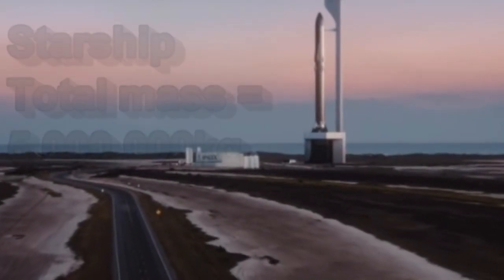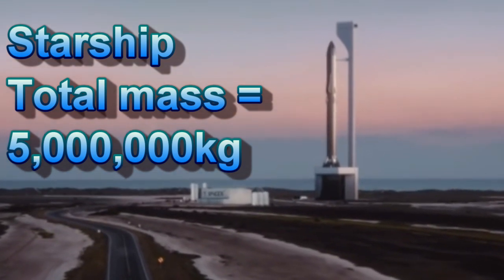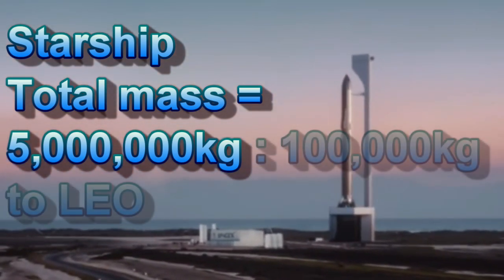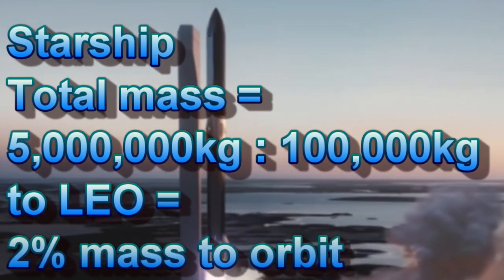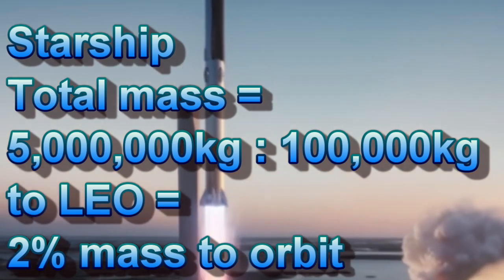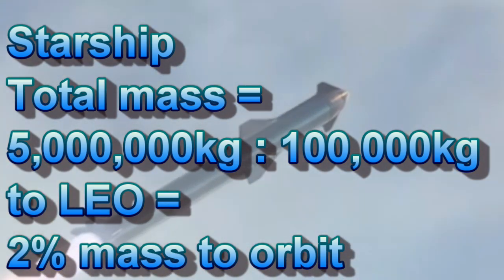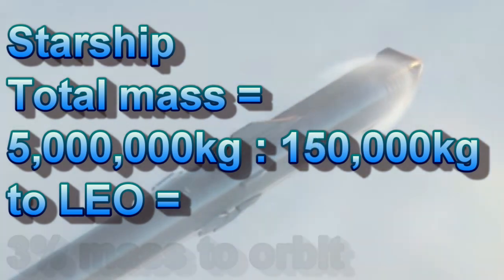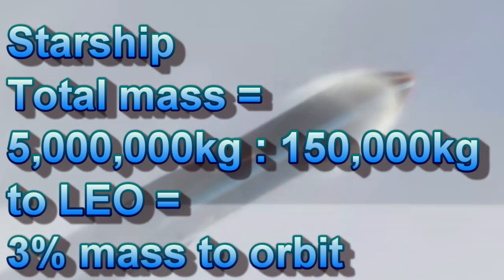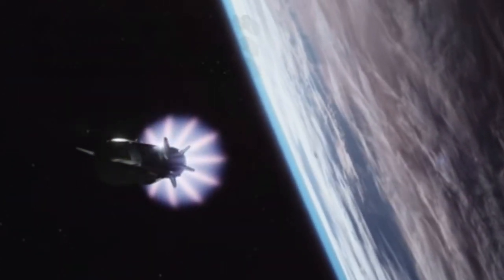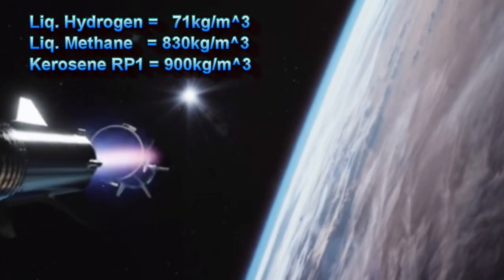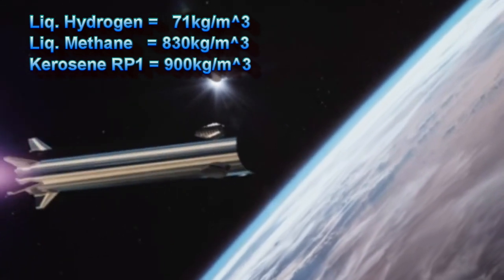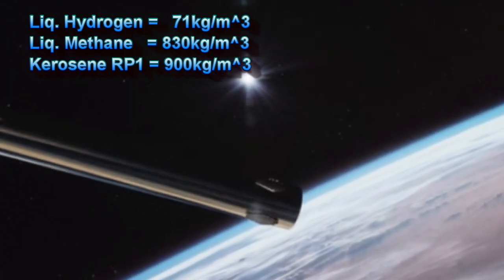Finally, the starship burning methane should have a liftoff mass of about 5 million kilograms and be able to get at least 100,000 kilograms to low Earth orbit. This gives us only a 2 percent mass to orbit, but it has the advantage of being completely reusable. And the starship may be able to get 150,000 kilograms to low Earth orbit, giving it a 3 percent mass to orbit. The choice of methane as a fuel appears to be the perfect balance between fuel density, where RP-1 wins but has coking problems, and energy content, where hydrogen wins but has low density and requires massive tanks.